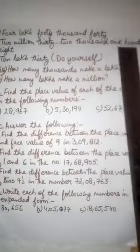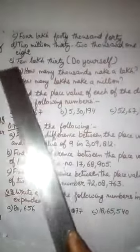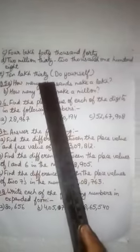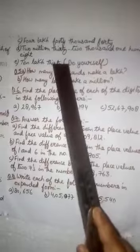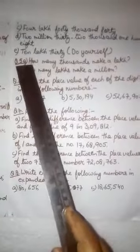Now next is C 4,40,040. D is 2,032,108. E is 10,30,000. These three parts also you have to do yourself. Now your worksheet finally starts.